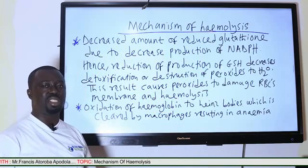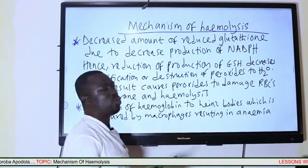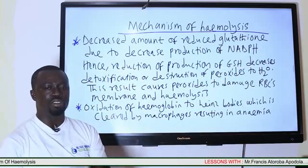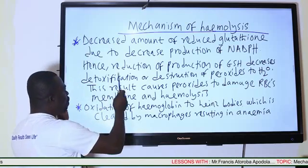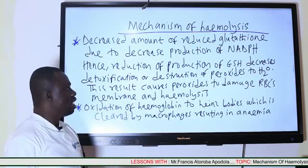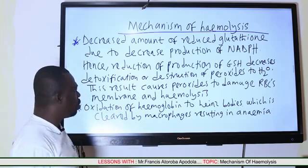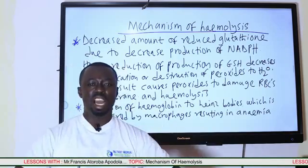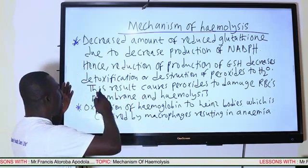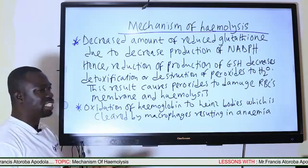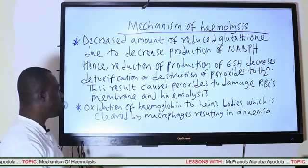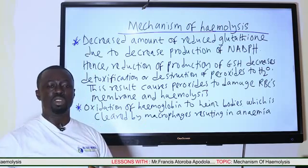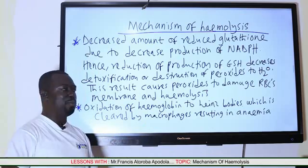The reduced glutathione levels can only decrease when the NADPH levels decrease, and that only happens when the individual is deficient of the GCSPD enzyme. Once we have reduced glutathione levels that are low, free radicals or oxidants will get an opportunity to exert their oxidative effects, causing damage to the red blood cells and resulting in hemolysis — the breakdown of the cells. 'Hemo' means blood and 'lysis' means breaking. Once there is hemolysis and the bone marrow is not able to compensate for the destroyed cells, then anemia will occur.